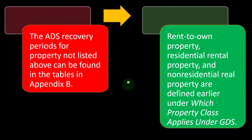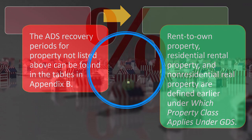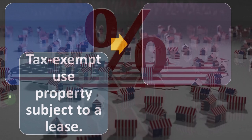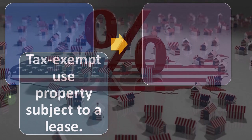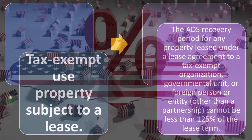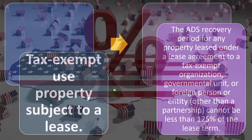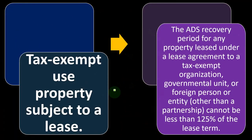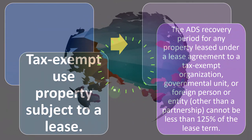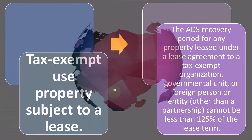ADS recovery periods for property not listed above can be found in Appendix B. Rent-to-own property, residential rental property, and non-residential real property are defined earlier — we discussed the more unusual situations in a prior presentation. Tax-exempt use property subject to a lease: the ADS recovery period for any property leased to a tax-exempt organization, governmental unit, or foreign person or entity other than a partnership cannot be less than 125% of the lease term.